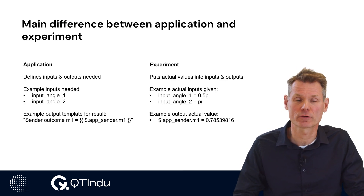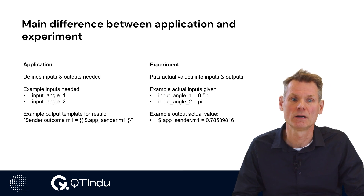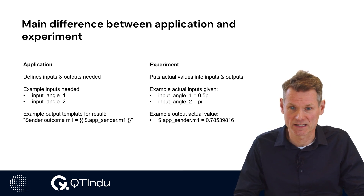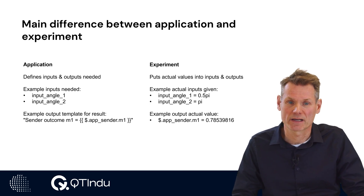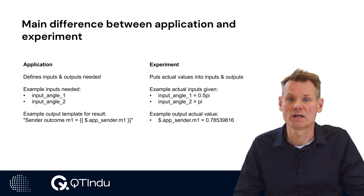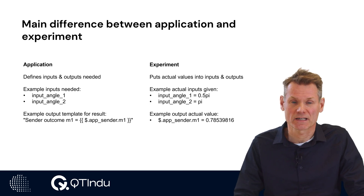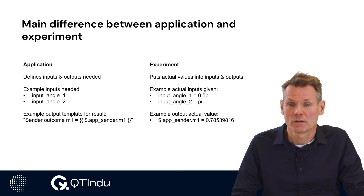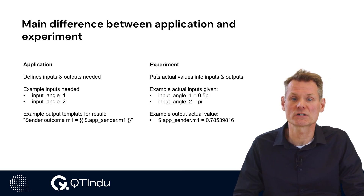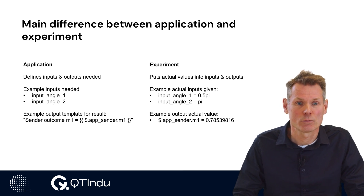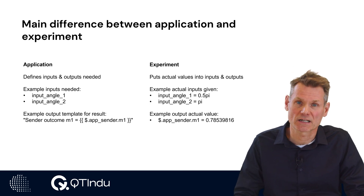An application defines the template for an experiment. An experiment is a runnable instance of the application. An experiment roughly consists of the application itself and the values for the inputs needed for the application — these are the application input parameters and the definition of the network configuration parameters of the chosen network. The way inputs are needed and how inputs and outputs are shown or used are defined by the application. The actual input values given for that instance when the application is runnable are part of the experiment. These input values may change for each experiment run.